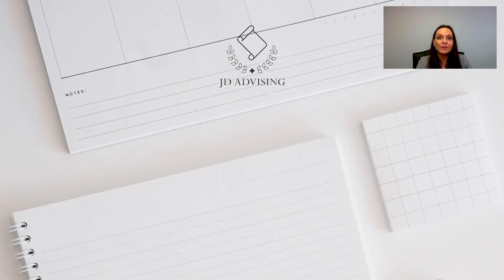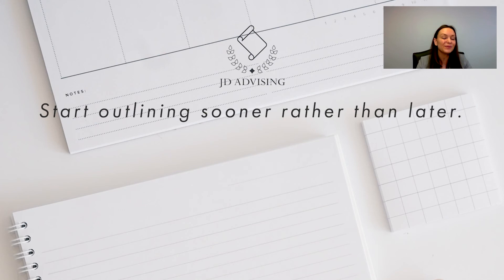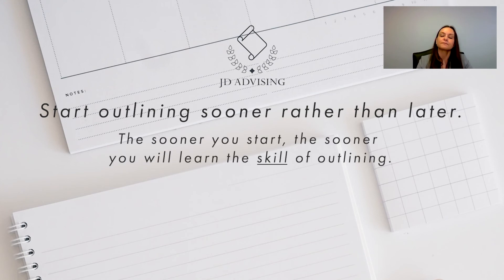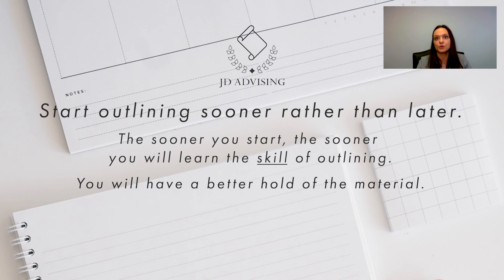Now that you have a better idea of how to outline, let's discuss why you should start outlining sooner rather than later. If you can start right at the beginning of the semester, that is excellent. The first reason to start early is that you'll learn the crucial skill of outlining sooner — outlining is challenging and unlike a lot of things you've done before. The second reason is you're going to have a better hold of the material, because outlining requires you to think about your notes, clean them up, synthesize them, and extract what's important — which means you'll ultimately understand the material better.